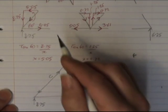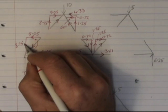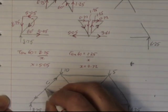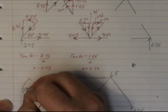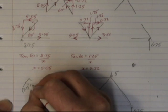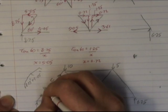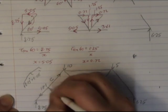And we can get the magnitude of this vector by doing that squared plus that squared equals that squared. So this force here will be the square root of 8.75 squared plus 5.05 squared, which will come to 10.1.